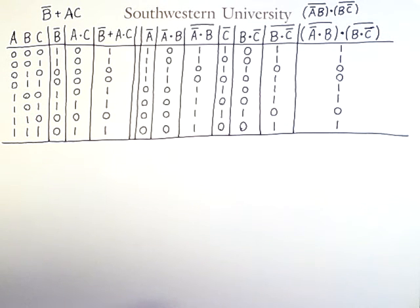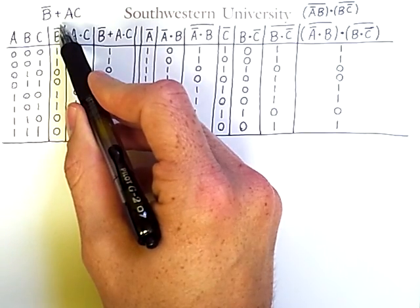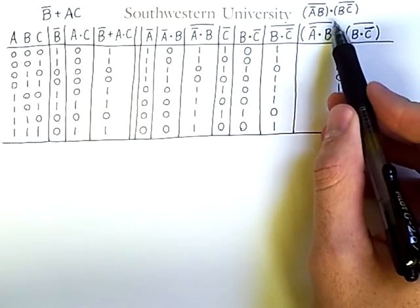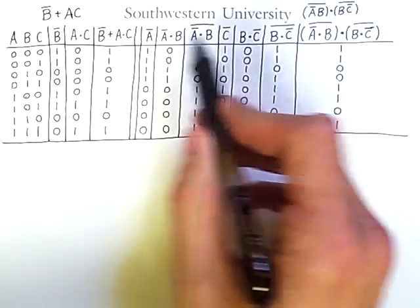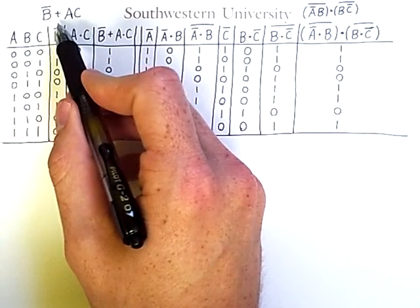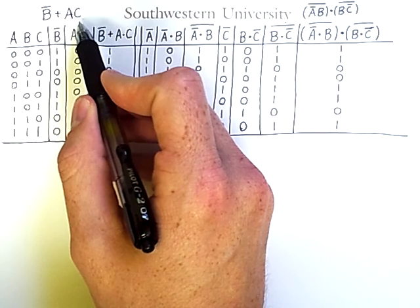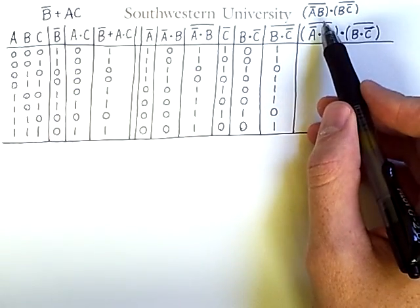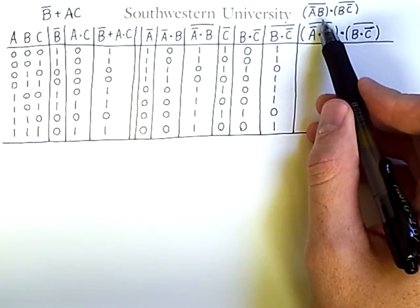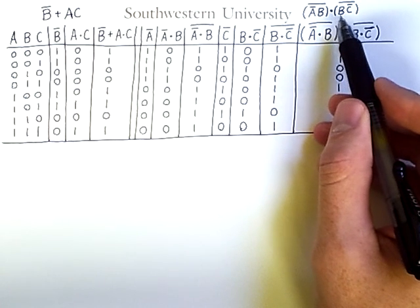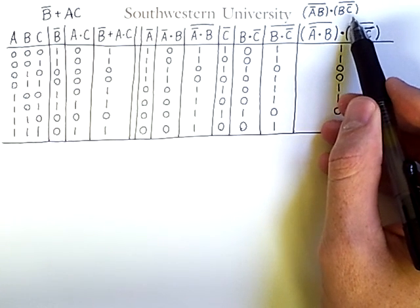This is a fairly large truth table. The point of it is to show that this Boolean expression and this Boolean expression are equivalent. Not B or A and C will always equal this expression: not A and B negated and B and not C negated.